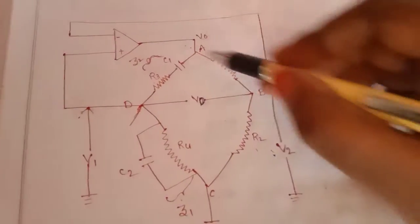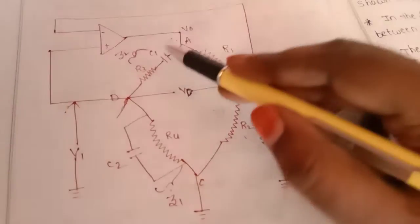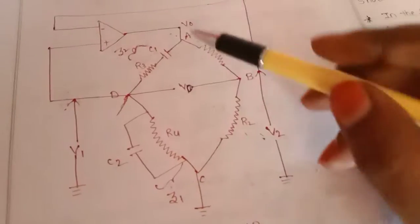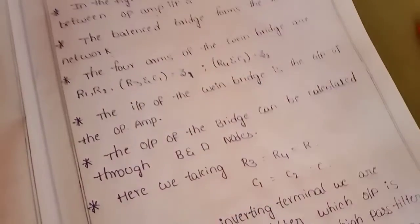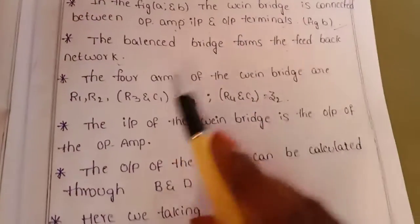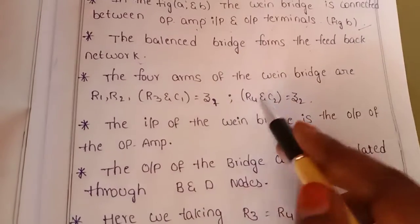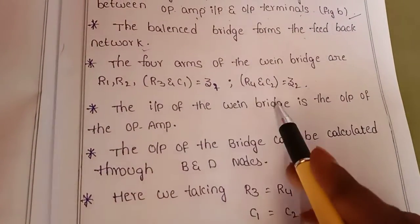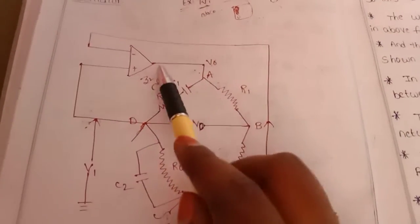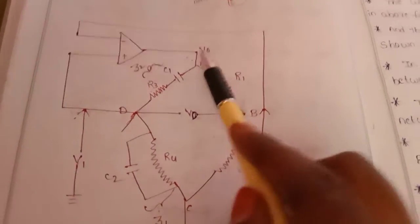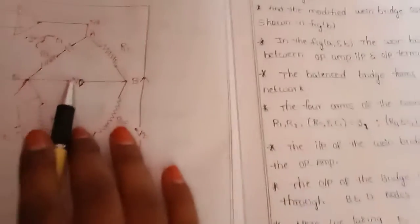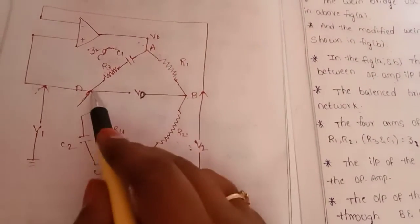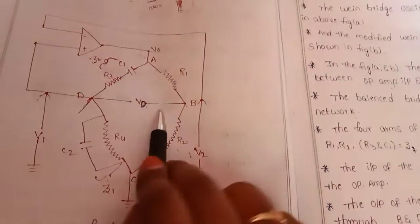The four arms of the Wien Bridge are R1, R2, R3 with C1 (forming Z1), and R4 with C2 (forming Z2). The input of the Wien Bridge is the output of the op-amp. The output of the Wien Bridge is calculated through nodes B and D.